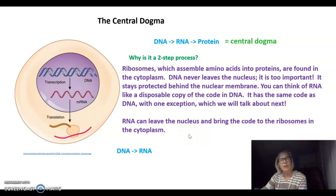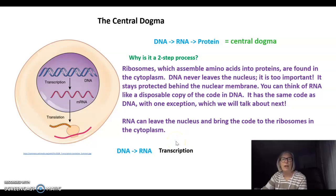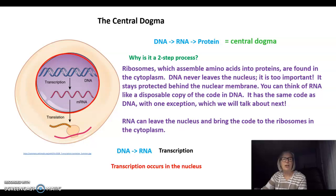So the first step in the central dogma is that DNA codes for RNA, and this is the process known as transcription. And transcription occurs in the nucleus.